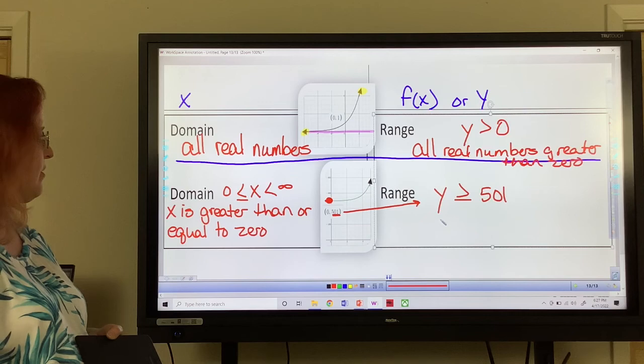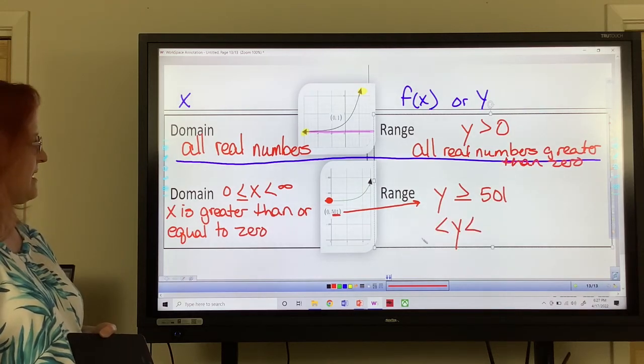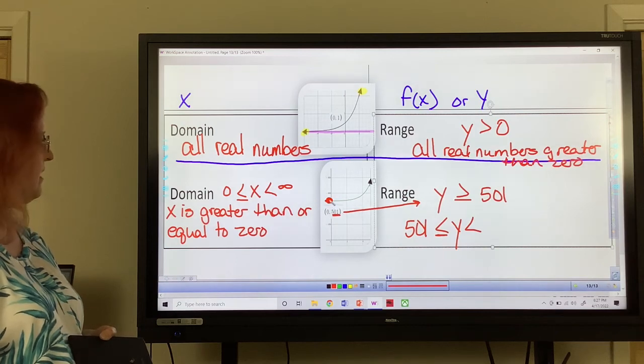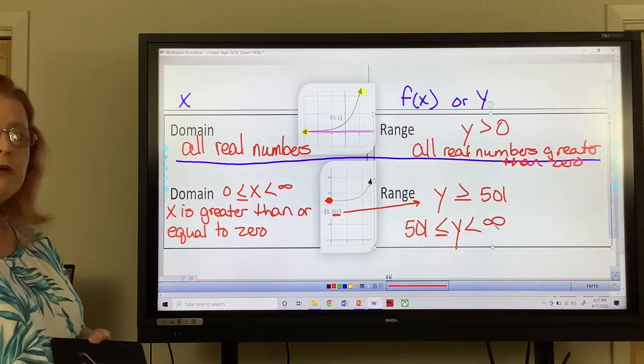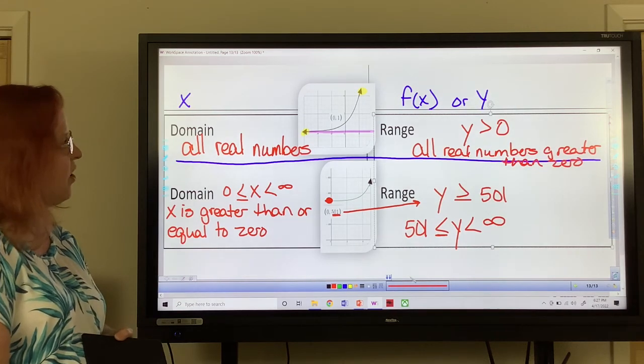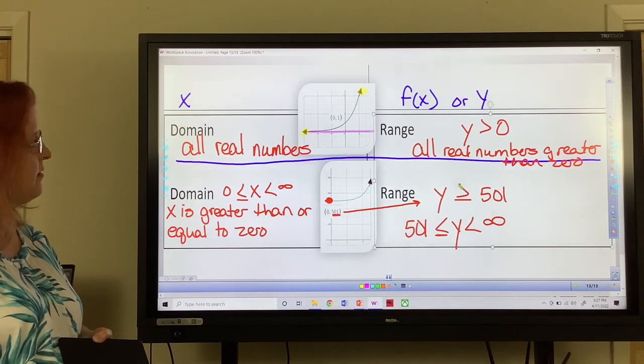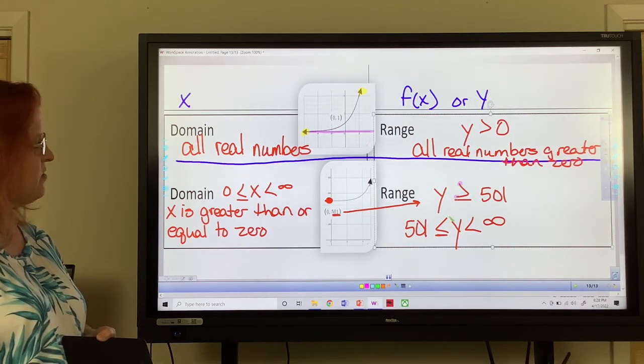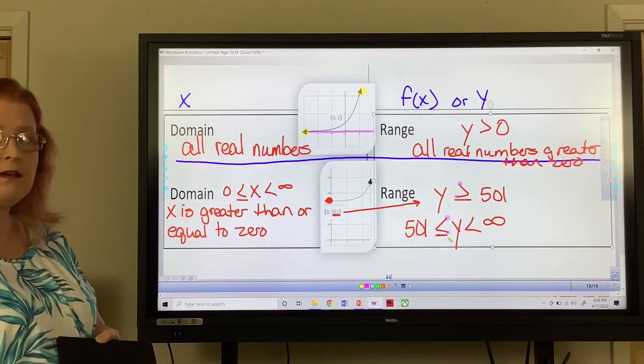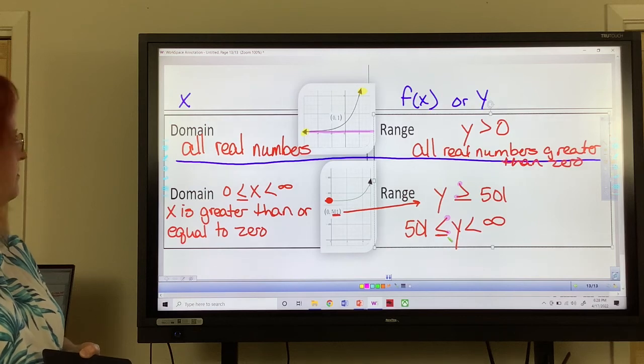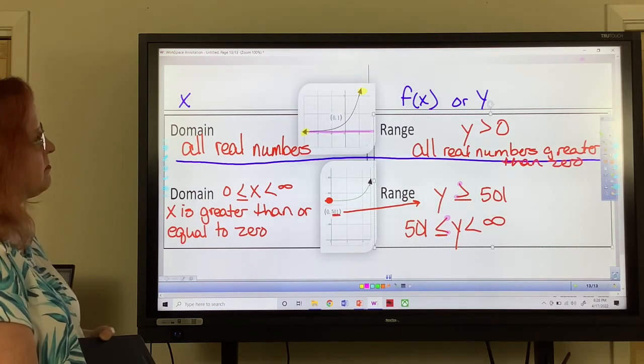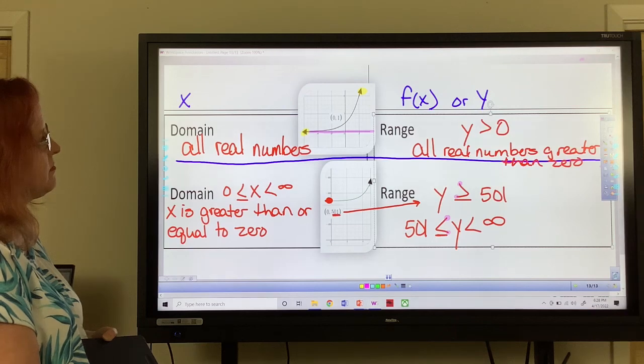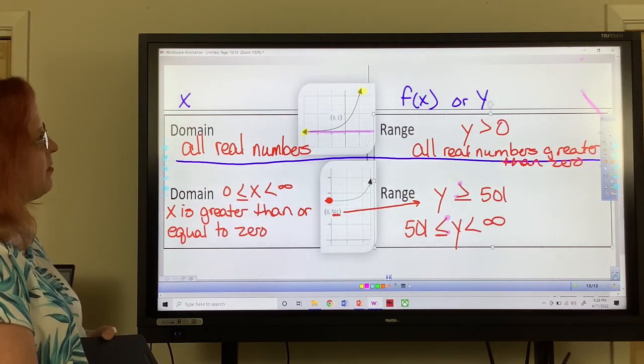Now, if we did it the regular way with our inequalities like this, our lowest value is the 501. And it's the equal because it's the dot. And our highest value is the infinity because we have the arrow on the end. And look at our two symbols. We have the open, the two points. We have the open and we have the open to the y. So it means the same thing. Greater than or equal to 501. Greater than or equal to 501.